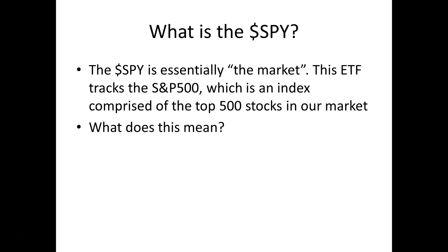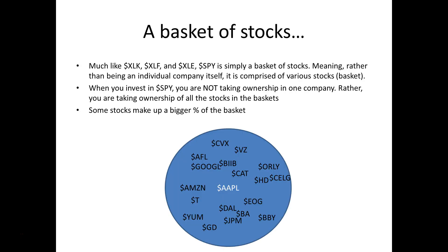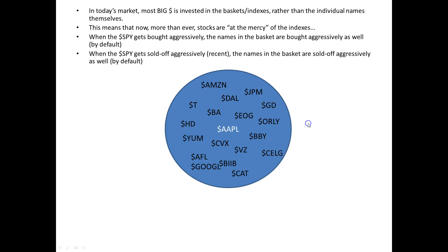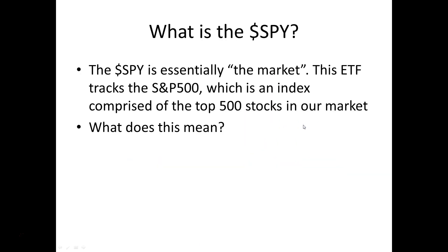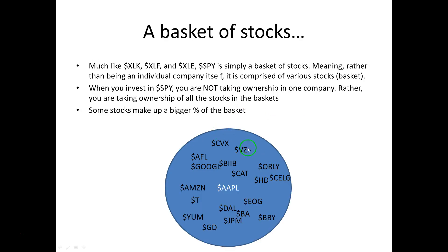The S&P 500 is our market index, comprised of the top 500 stocks in our market. The SPY is a basket of stocks — we've talked a lot about XLK, XLF, XLE, the individual sector ETFs — well the S&P 500 is like the ETF for our entire market. It's important to understand that the SPY is simply a big basket of all kinds of different stocks: those 500 names.